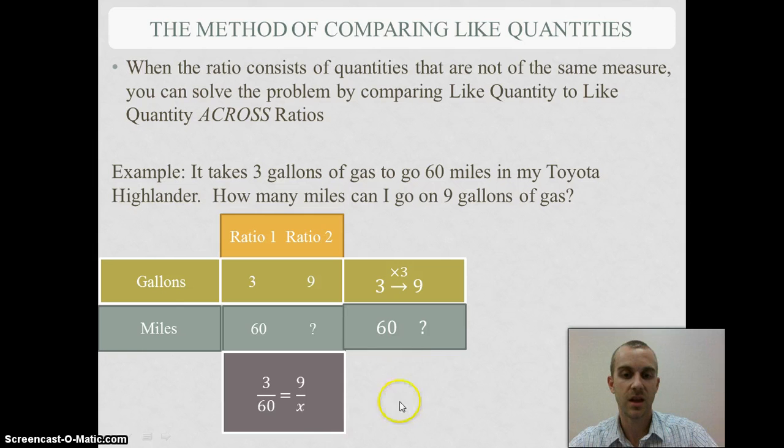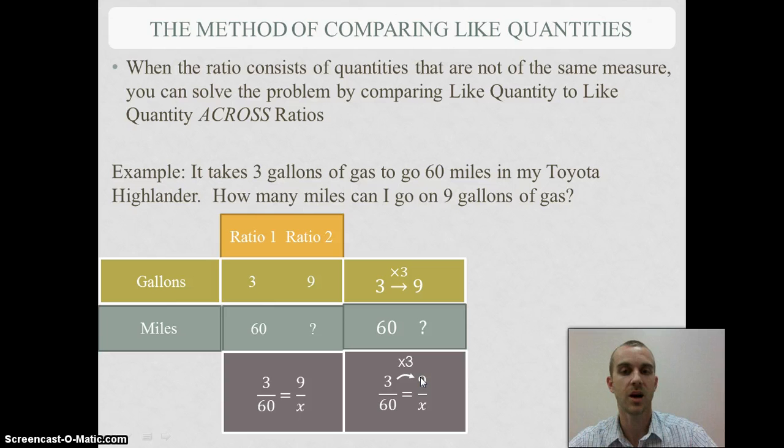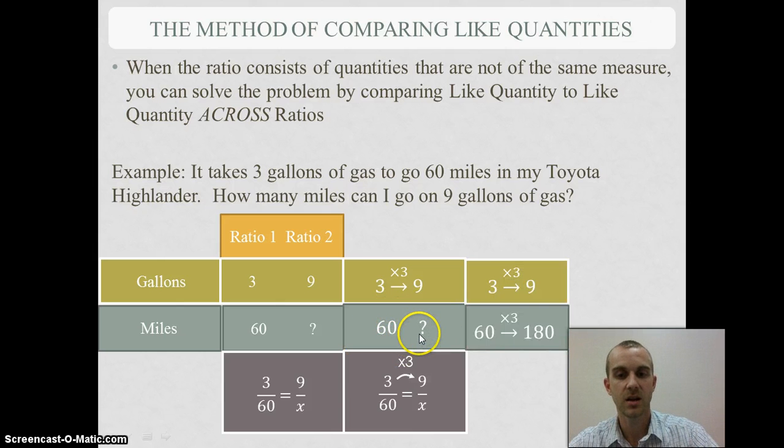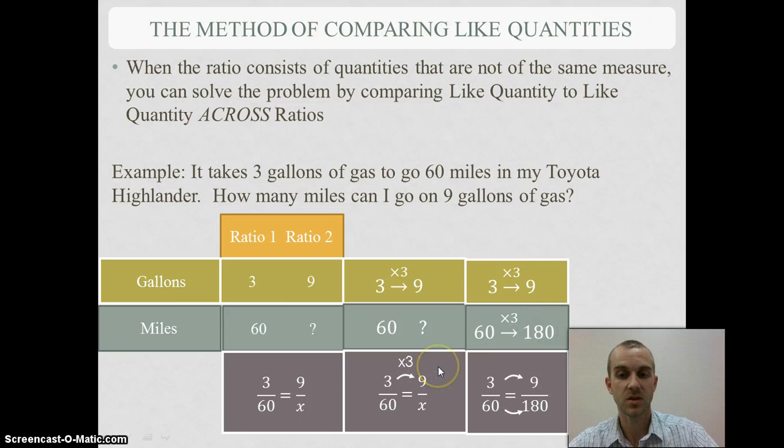If I look at that in the fraction form, I can see that across the numerators to get from one numerator to another, I multiply it by 3. Well, that means I need to do the same to the denominator, or to the 60 and what I'm trying to find. 60 times 3 gives me 180. So if I look at that in the fraction form, I multiply both the numerator and denominator by 3 to get 9 over 180, so I know that my mileage is 180 miles.